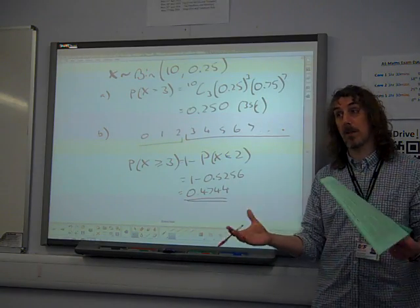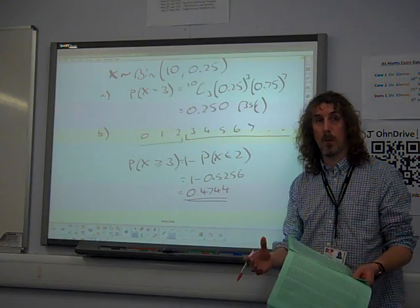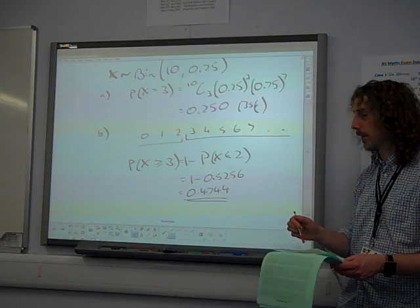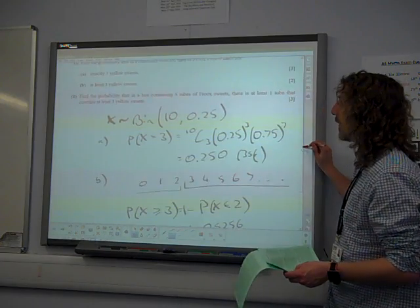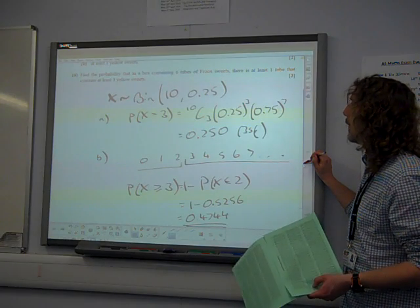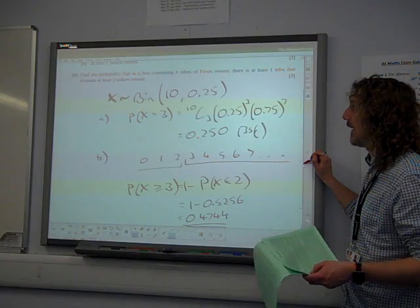Of course we are doing it to three significant figures, so 0.474 is probably a better answer. But they're always going to accept the four significant figures that you get in the formula booklet. Okay. Then it said, find the probability that in a box containing six tubes of sweets, there's at least one tube that contains at least three yellow sweets.